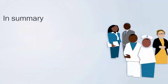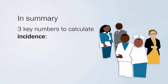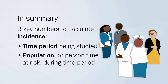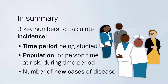In summary, we need to know three key numbers when calculating incidence: the time period being studied; the population or person time at risk during the time period, which is the denominator; and the number of new cases of the disease, which is the numerator.